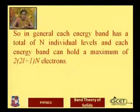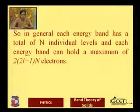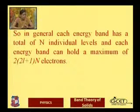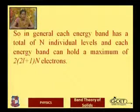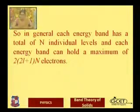In general, each energy band has a total of N individual levels, and each energy band can hold a maximum of 2(2l+1)×N electrons. The factor of 2 accounts for spin, (2l+1) represents the orientations from the orbital quantum number l, and N is the total number of atoms in the solid.